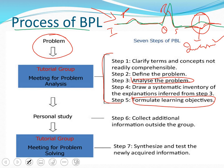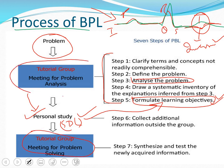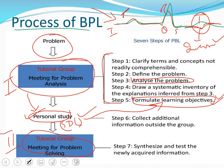PBL is usually taken in two stages. In stage one, the students sit around the table, go through steps one to five, and settle their objectives. Then they go and perform personal self-study — this is called self-directed learning. They self-study based on the objectives set. For example, if the objective is understanding T-wave inversion, they will study what T-wave inversion is and what its causes are. Then they return for stage two.